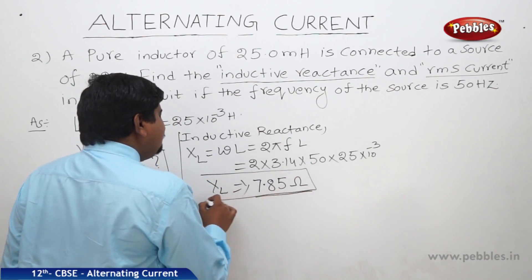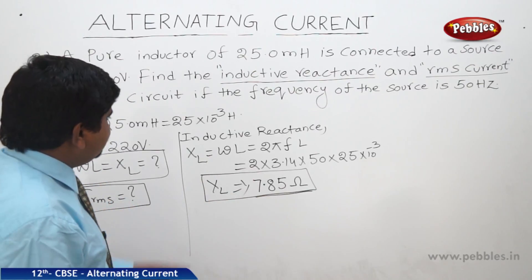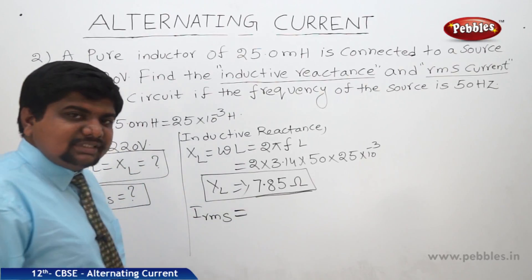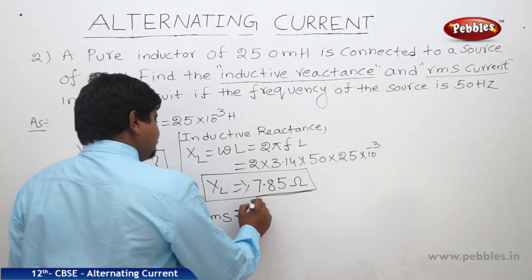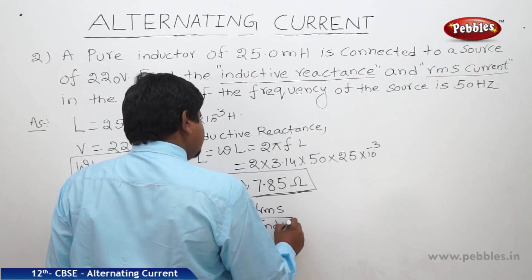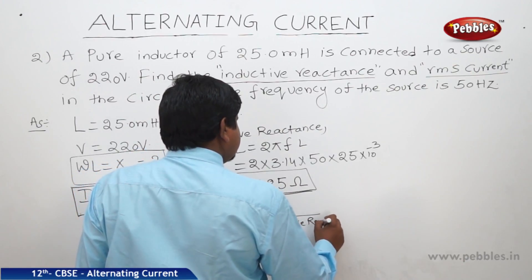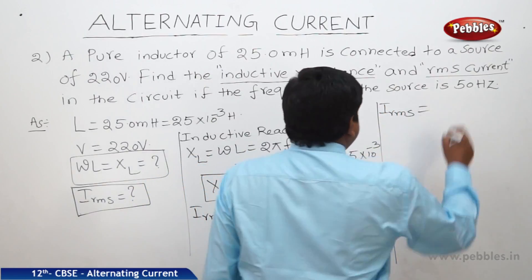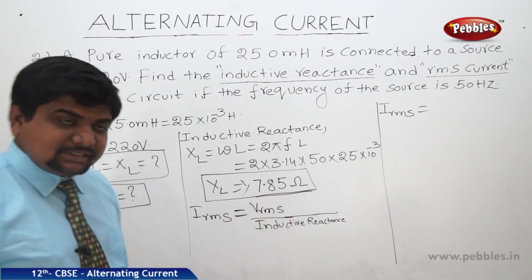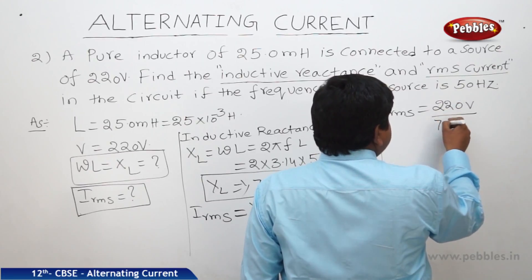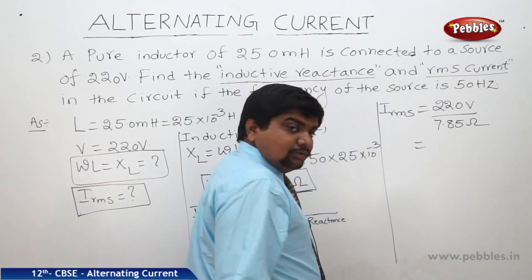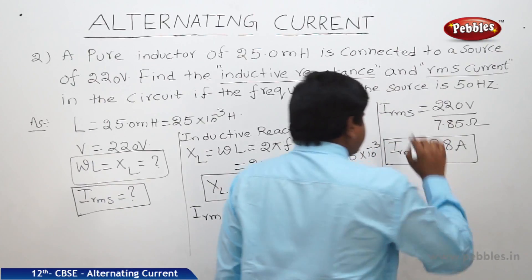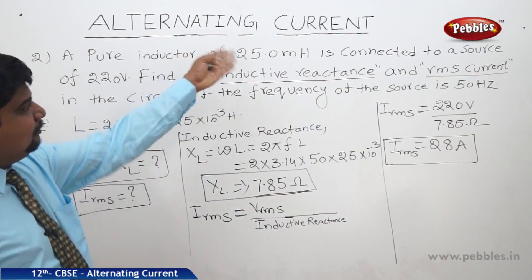Inductive reactance is similar to resistance in dimensions and units, giving 7.85 ohms. For the RMS current: I_RMS = V_RMS / XL. Substituting the values, we get approximately 28 amperes. These are the values found from the given information.